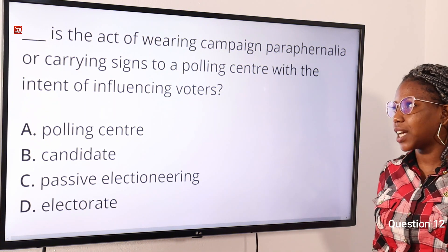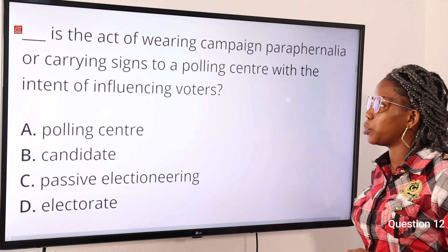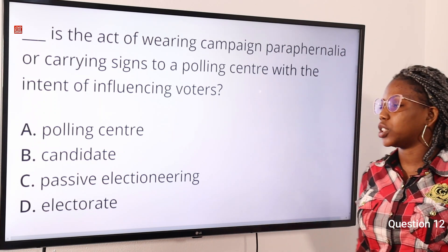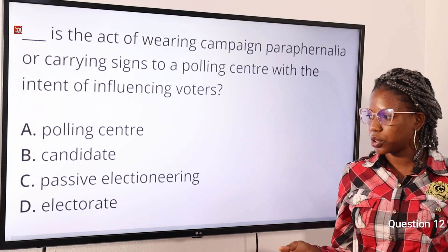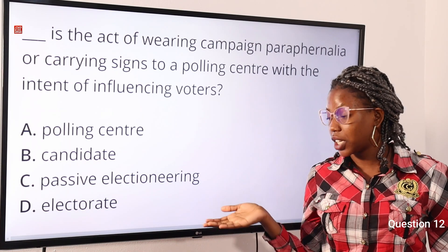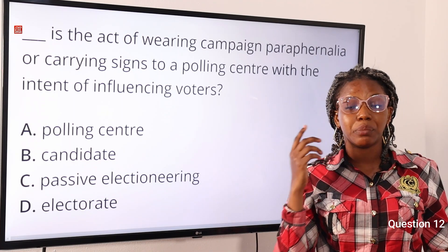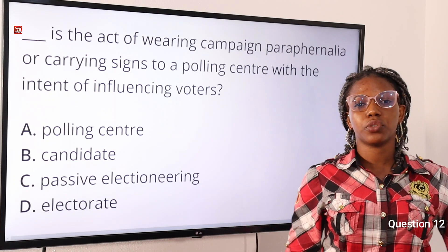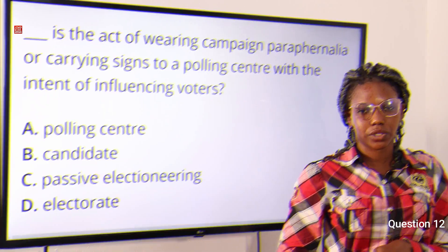Question twelve: the act of wearing campaign paraphernalia or carrying signs to a polling centre with the intent of influencing voters is — option A: polling centre, option B: candidates, option C: passive electioneering, option D: electorate. The answer is option C, passive electioneering — the act of wearing campaign paraphernalia or carrying symbols with the intention of influencing voters.